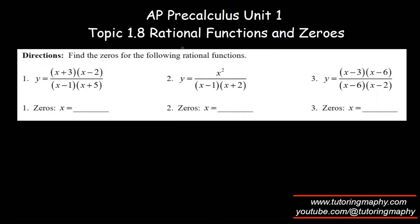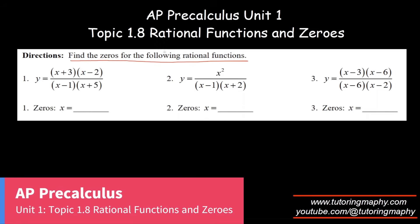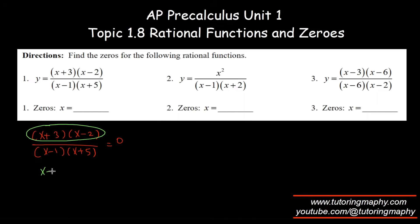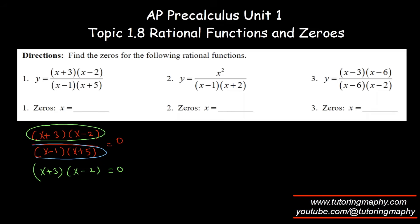Let's review topic 1.8: rational functions and zeros. We need to find the zeros of the following functions. For a rational function to equal zero, I need to follow two conditions: first, set the numerator equal to zero — so x plus three times x minus two should equal zero — but at the same time the denominator should not be zero at the points obtained from the numerator.